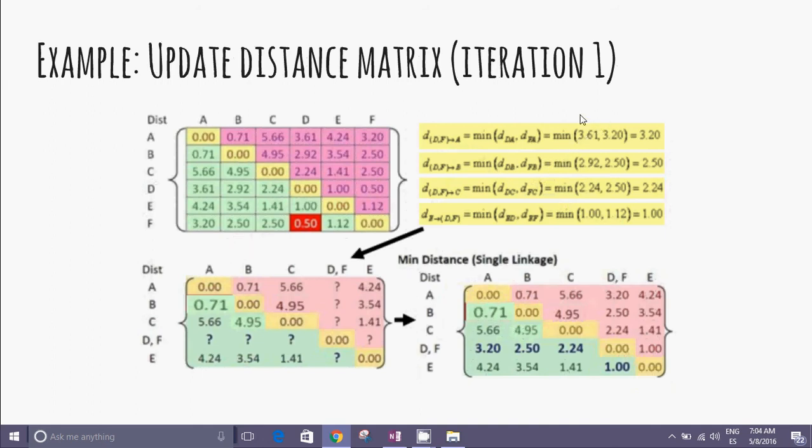We choose the minimal approximation and calculate the distances between the clusters: D and A, D and B, D and C, between E and D and F.